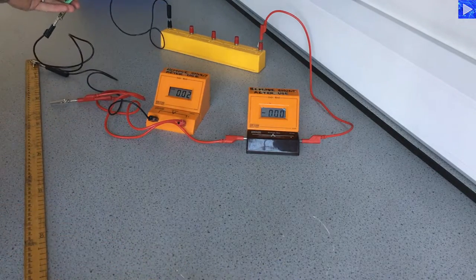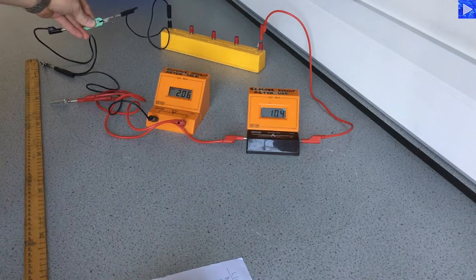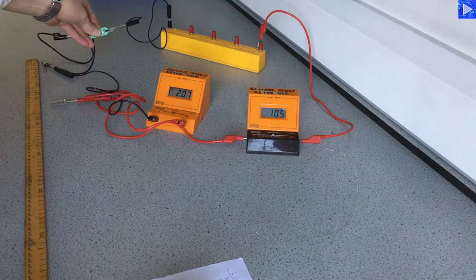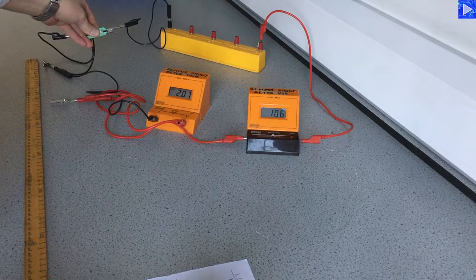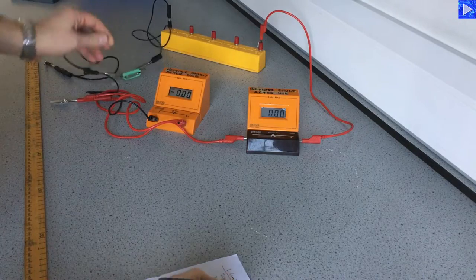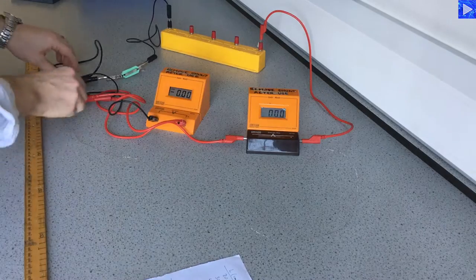Now pass the current through. 1.03 and 2.0. 1.04 I think. 2.06. So I am writing down the current and voltage.